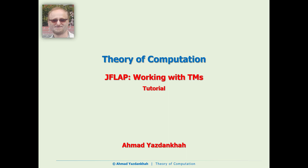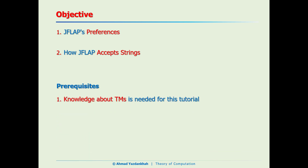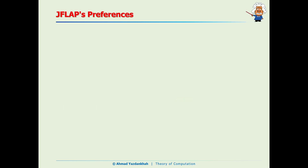Let's get started. We can customize JFLAB's behavior by changing its preferences. First we will talk about JFLAB's preferences, then we will focus on JFLAB's different behaviors to accept a string. To understand this tutorial you would need knowledge about Turing machines, and please note that we will be using JFLAB 7.1.